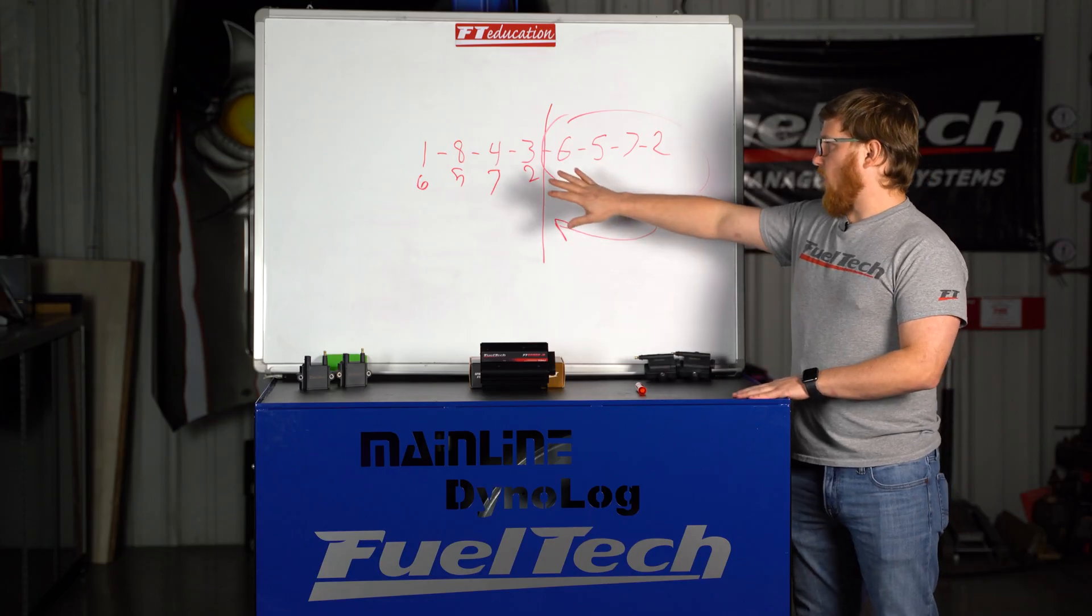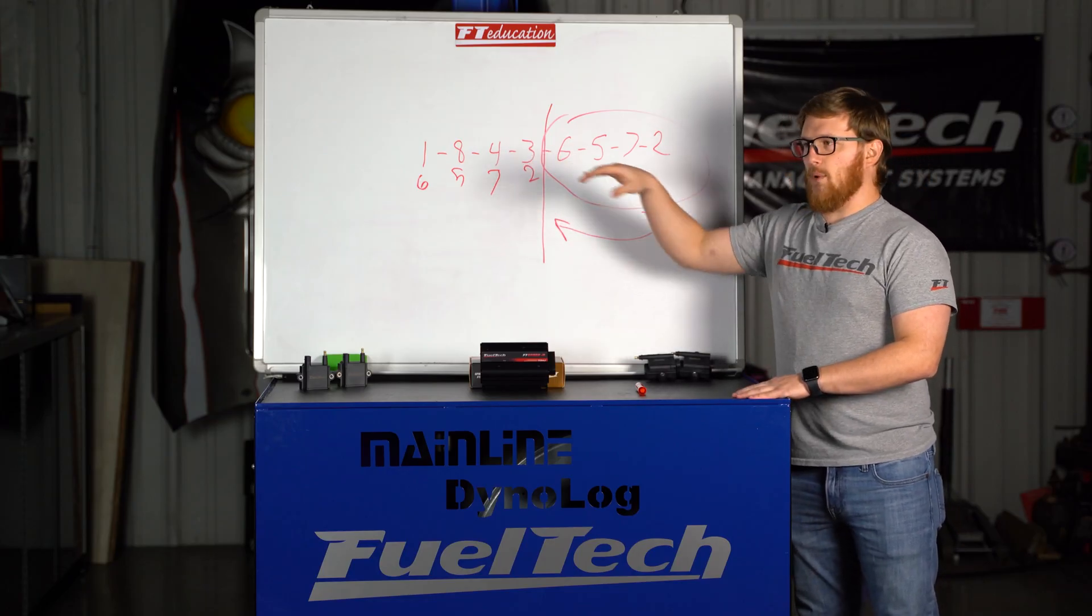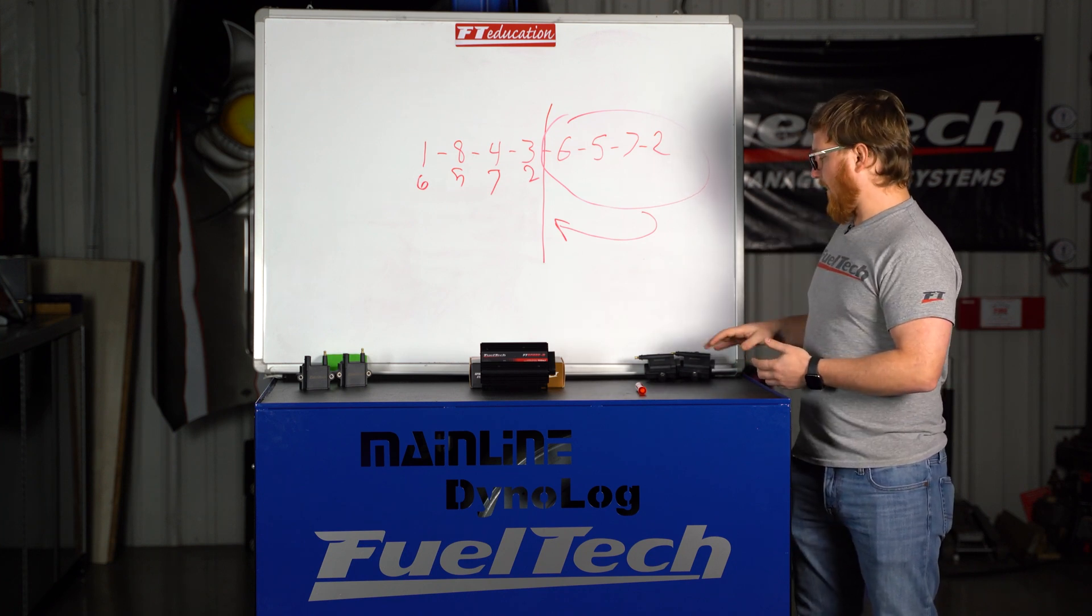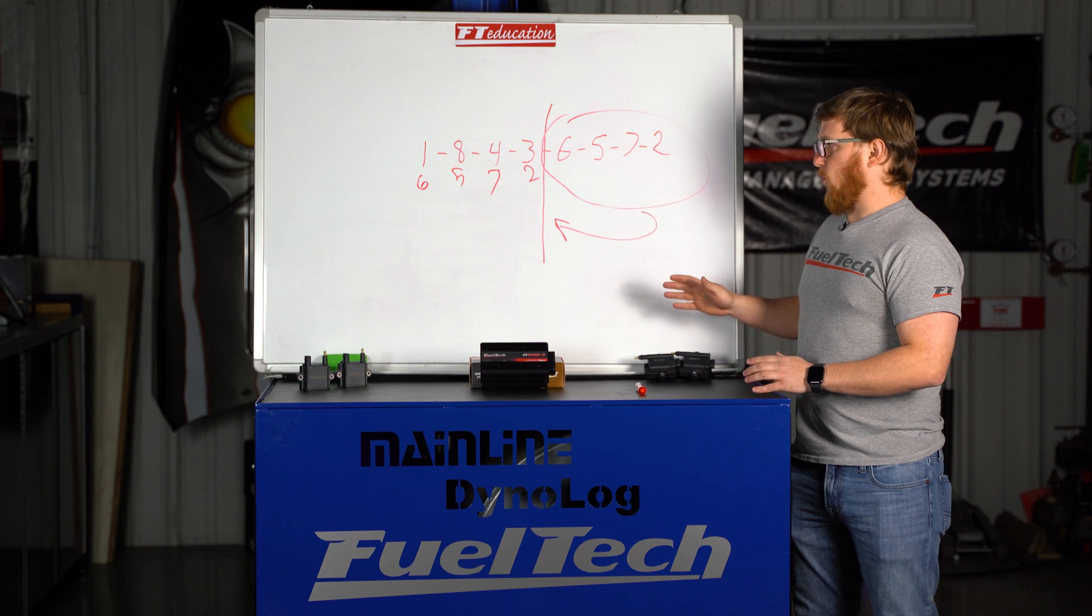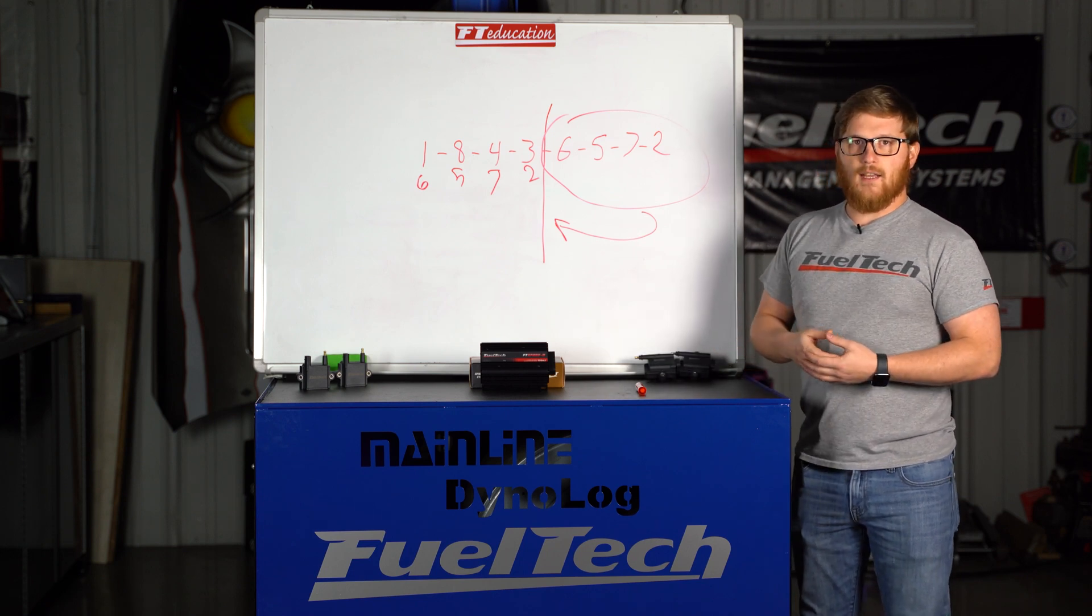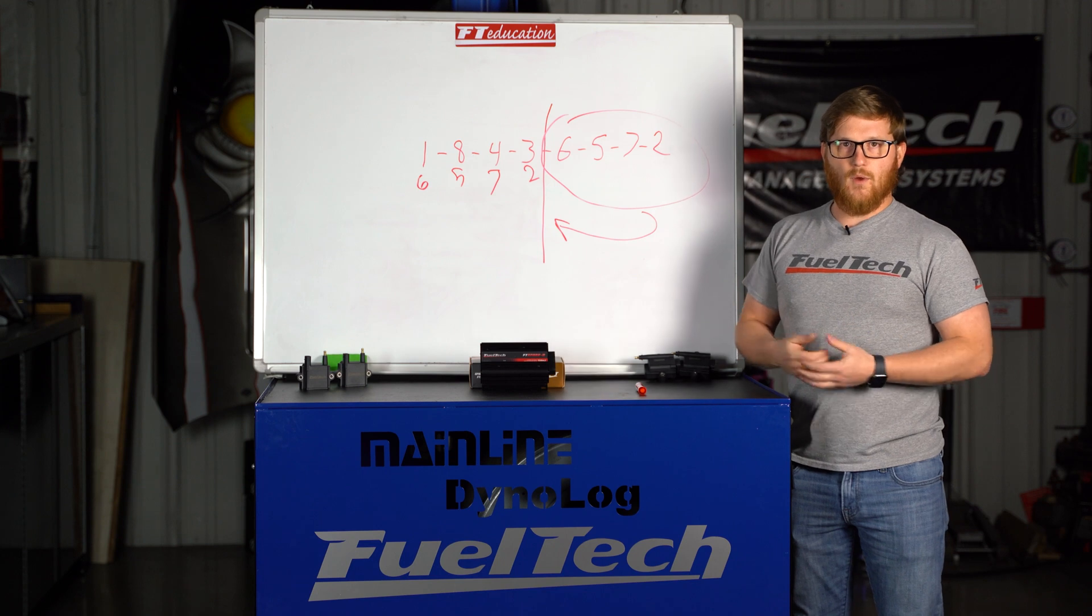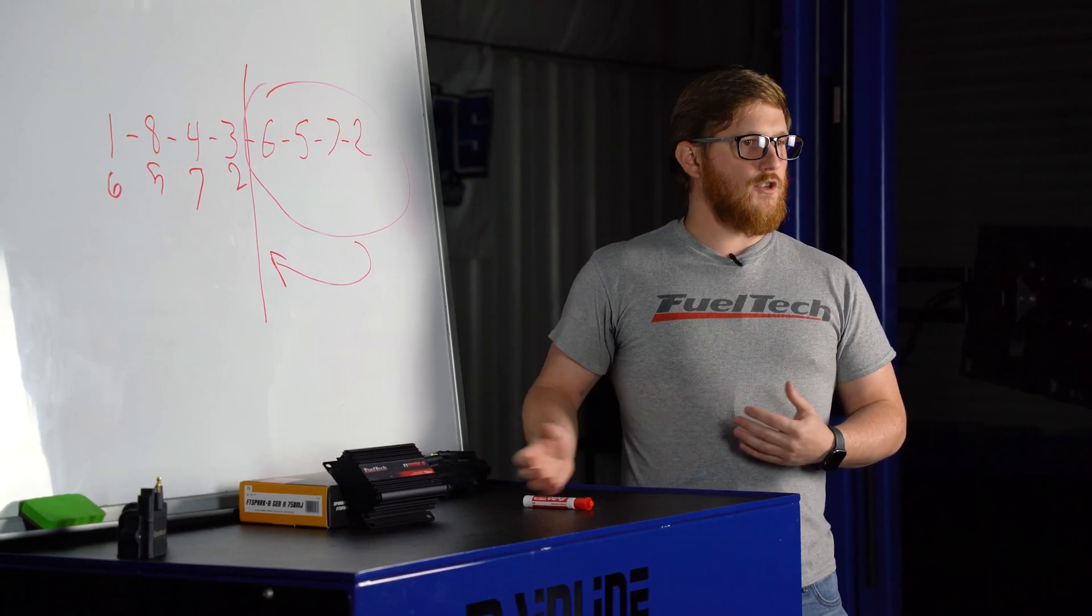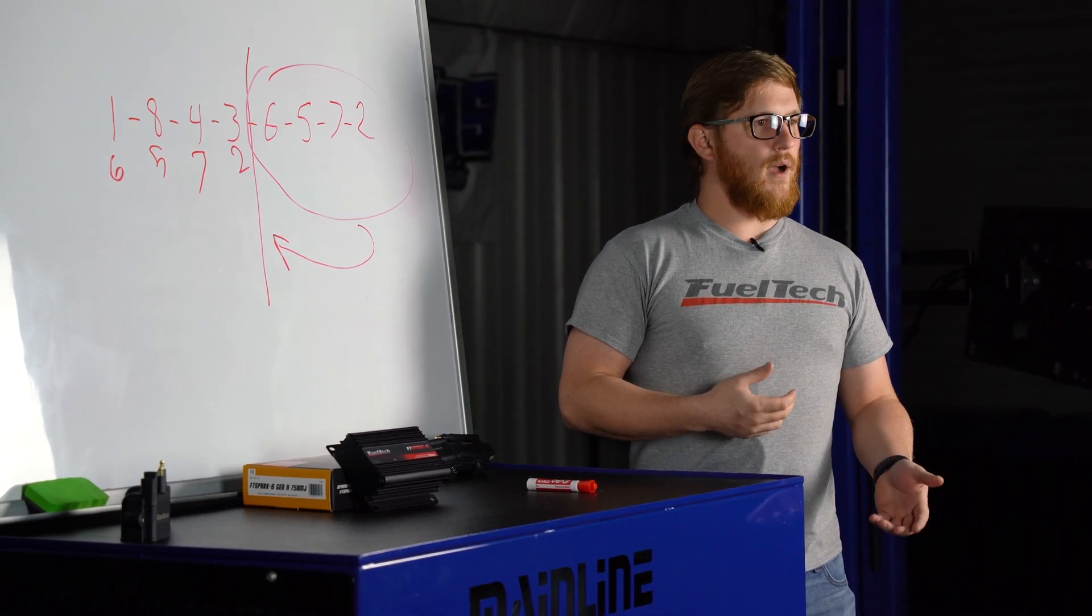Once again, like I said, you are kind of doubling the amount of RPM that the coil thinks it's doing. So for instance, if you have an eight cylinder engine and you're running 6,000 RPMs, it's going to think that it's doing double that, 12,000 RPM. So you actually have less time to charge the coil and get the most energy out of it possible.